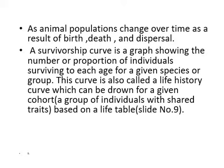As animal populations change over time as a result of birth, death, and dispersal, the survivorship curve is a graph showing the number or proportion of individuals of a population surviving to each age for a given species or group of animals. This survivorship curve is also called a life history curve, which can be drawn for a given group of organisms with shared traits based on a life table.